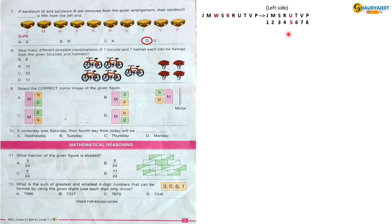Question 8: How many different possible combinations of one bicycle and one helmet each can be found from the given bicycles and helmets? The total number of bicycles are 5. The total number of helmets are 4. So maximum combination of one bicycle and one helmet is 5 multiplied by 4, equals 20. So the correct option is option C, 20.